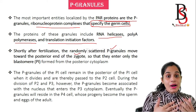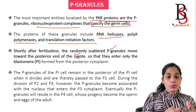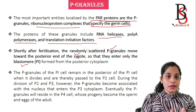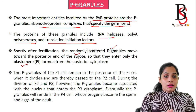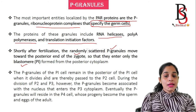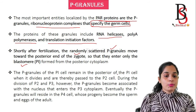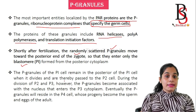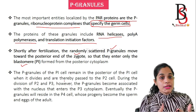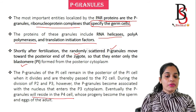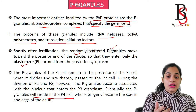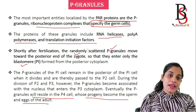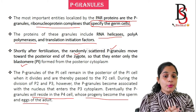Just after fertilization, the randomly scattered P granules move to the posterior end of the zygote and enter only the P1 cell. The anterior end is the somatic cell and the posterior end is the stem cell, the P1 cell. The P granule remains in the posterior of the P1 cell, and when it divides it passes to the P2 cell, then to P3, and eventually resides in the P4 cell. We know that the P4 cell gives rise to the germline cells — sperm and eggs — in adults.